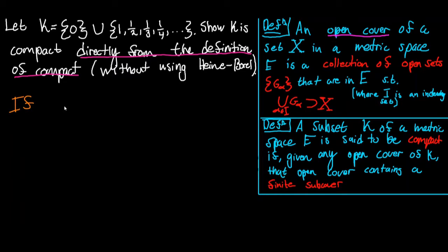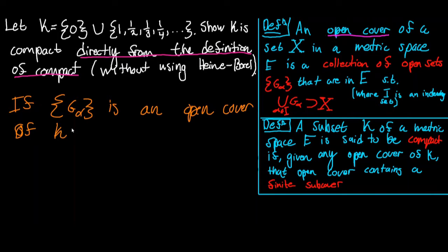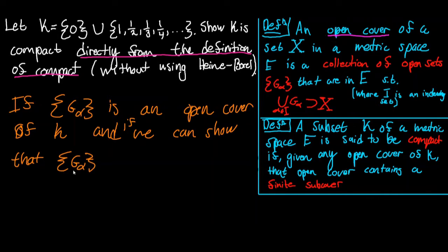If G_alpha is an open cover of K, and if we can show that this collection of open sets — whose union contains K — that's what it means for a collection of open sets to be an open cover: the union of all sets in the collection must contain K.